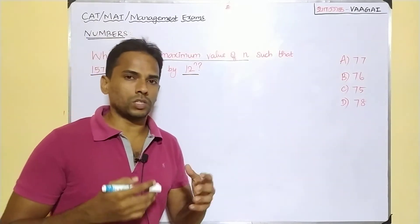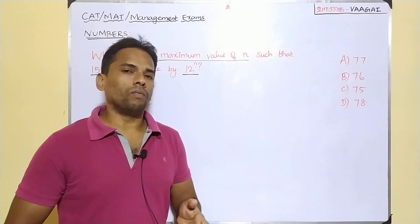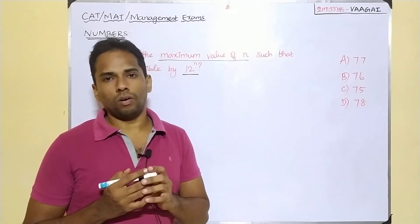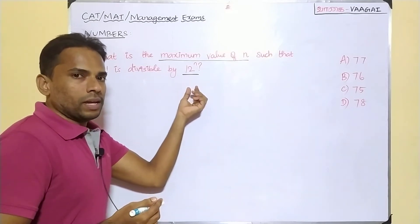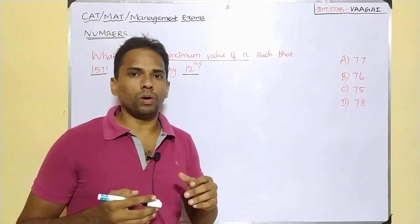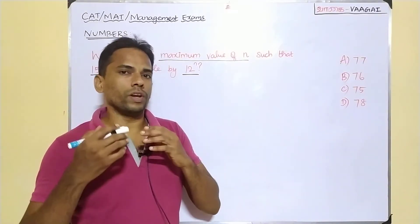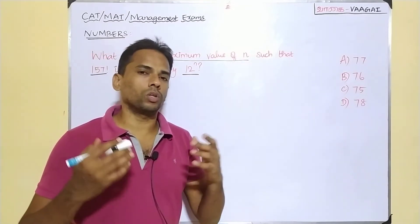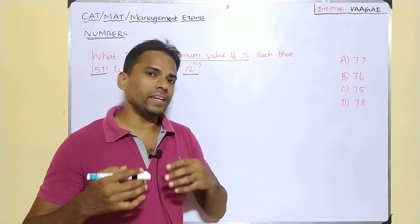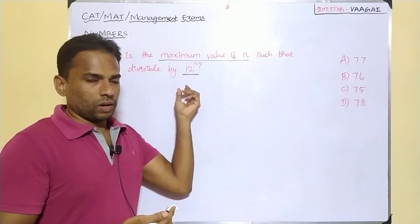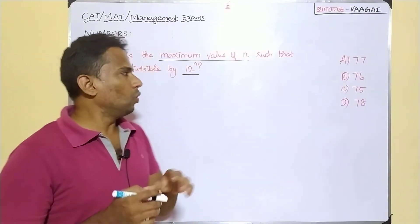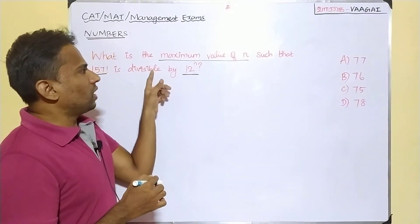By seeing the question itself you would have inferred that this is familiar to you, because we have already seen questions based on the same concept — finding the maximum power or finding the highest power of any given number in another number's factorial. I can attach the link of those videos in the iCard or description so you can have a quick visit. We have seen the highest power of both prime and composite numbers in a given number's factorial.